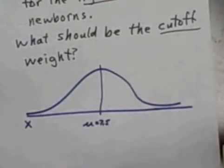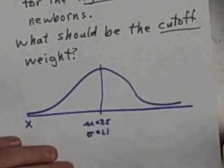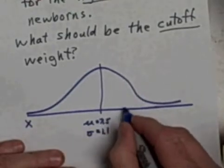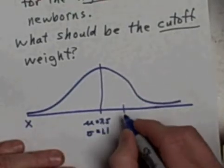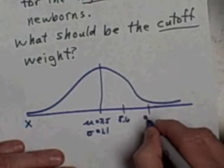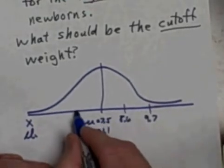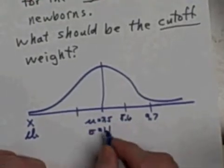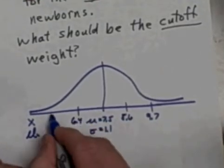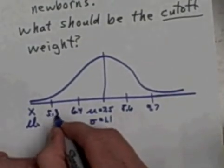So the mean in a normal distribution is always smack dab in the middle and the standard deviation is 1.1. So let's just show a couple standard deviations. If I go out one standard deviation that takes me out to 8.6 pounds. If I go another standard deviation that takes me out to about 9.7 pounds. If I come to the left here that takes me out to about 6.4 pounds. If I come out one more standard deviation to the left that takes me out to 5.3 pounds.